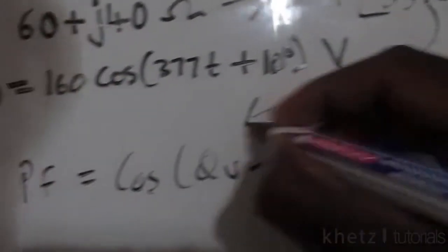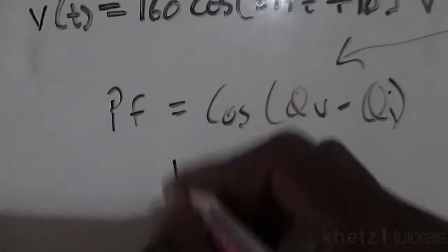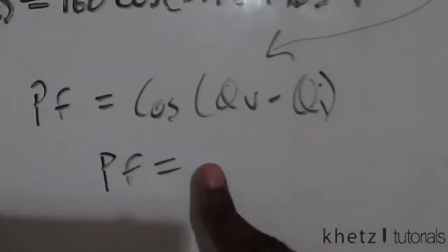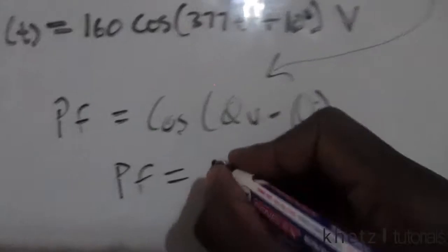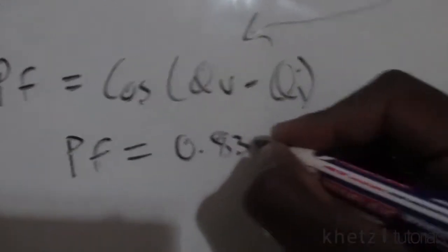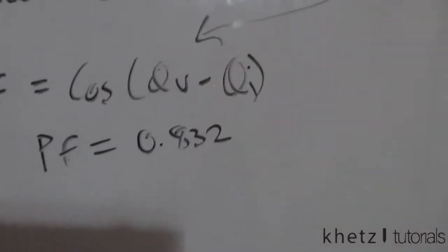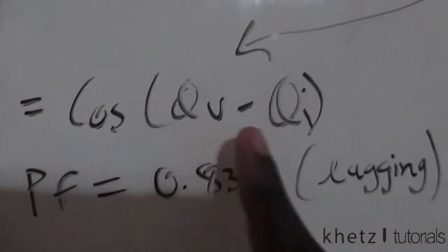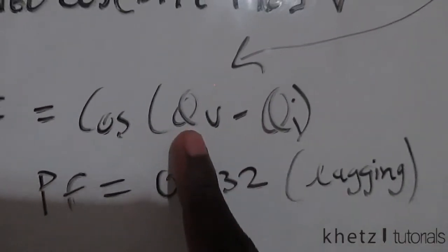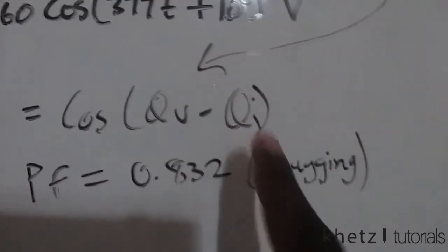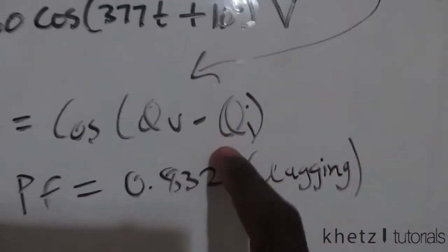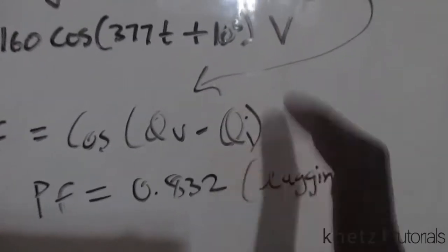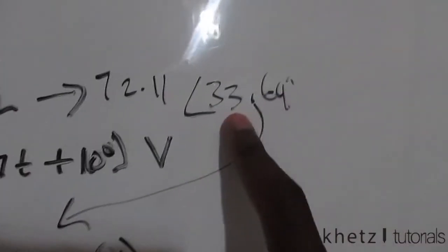We're going to take this value and substitute it in there to simply find our power factor, and you should get a power factor of 0.832. This power factor is lagging, and a quick way to see that is because this angle is positive, which means when you compute this subtraction the voltage angle is actually greater. So the current is lagging because it has a smaller value for the angle, and that is why this angle is actually positive.